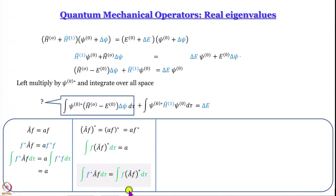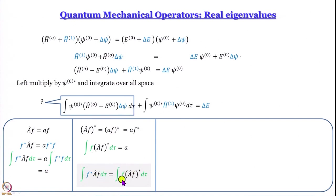Using this, we have the expression: integral of f* A-hat f d-tau equals the integral of f multiplied by (A-hat f)* d-tau. What we are seeing is that we can interchange the complex conjugate and the function. But our job is not done, because here the two functions are different — we need something like integral f* A-hat g d-tau, whereas we have integral f* A-hat f d-tau. We need to somehow bring in a g.